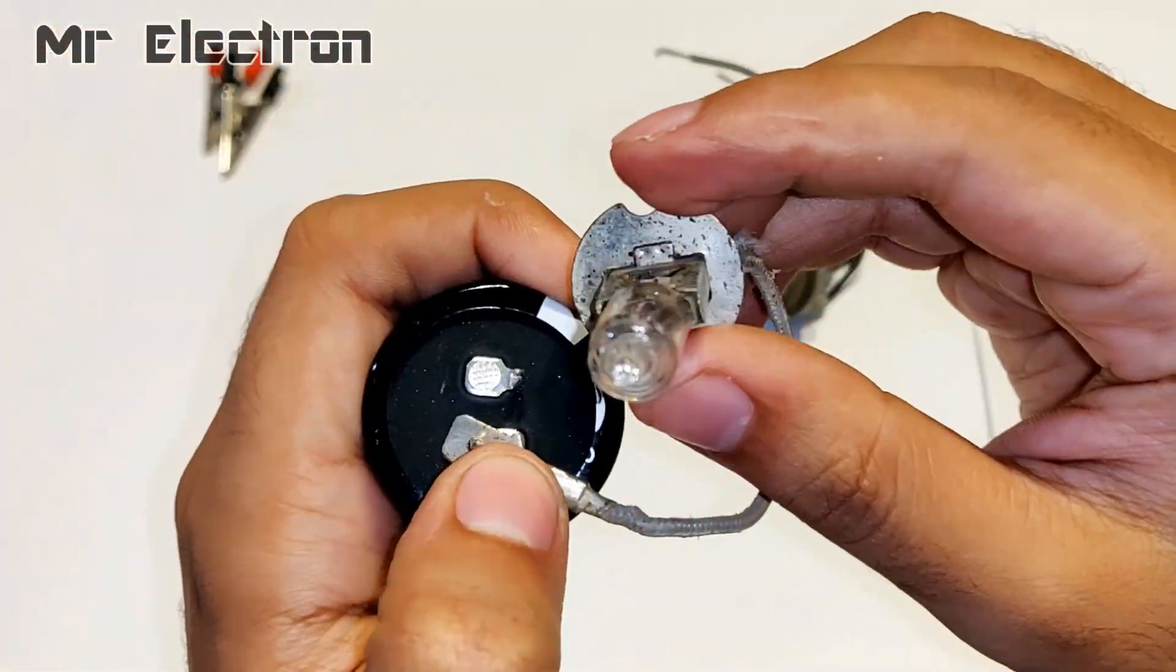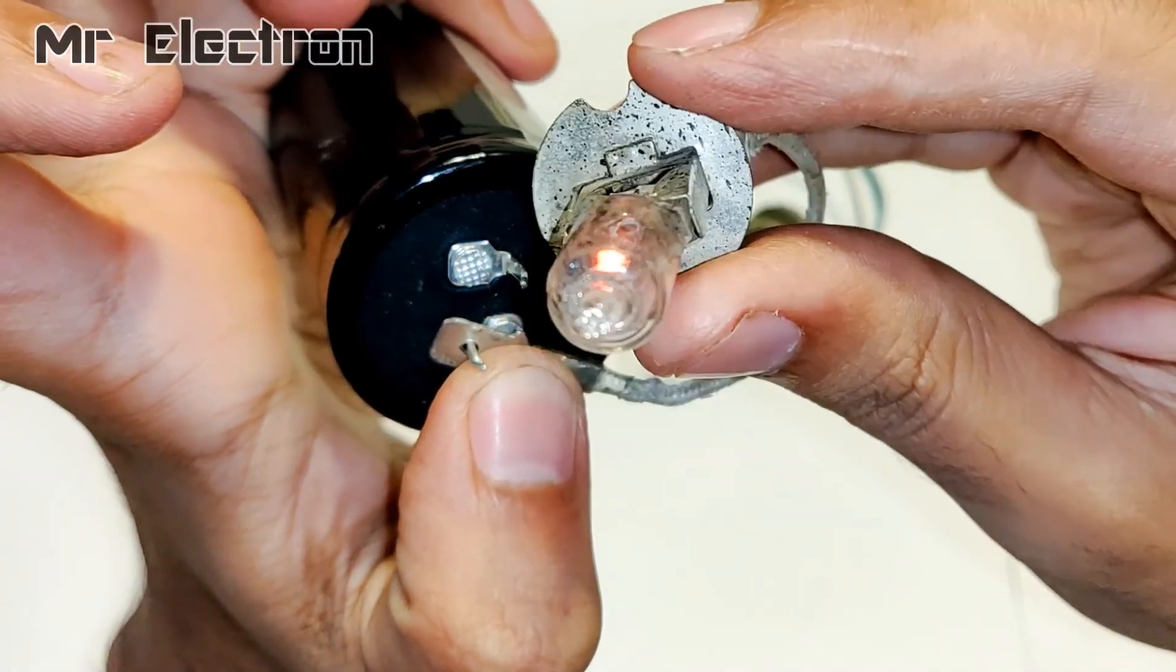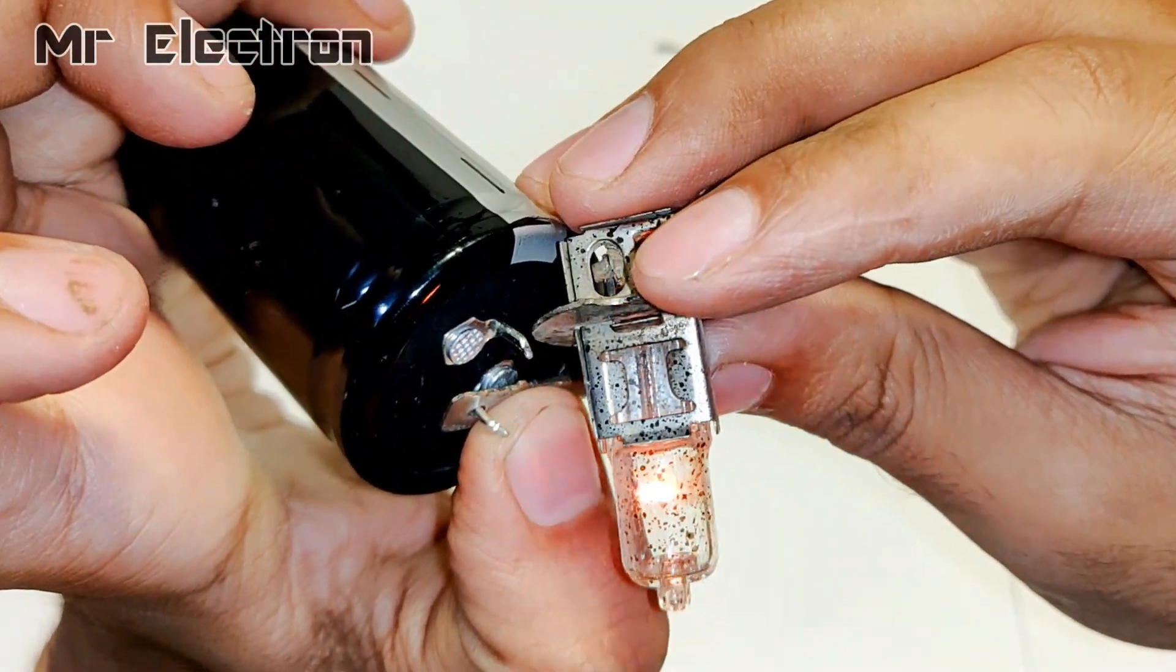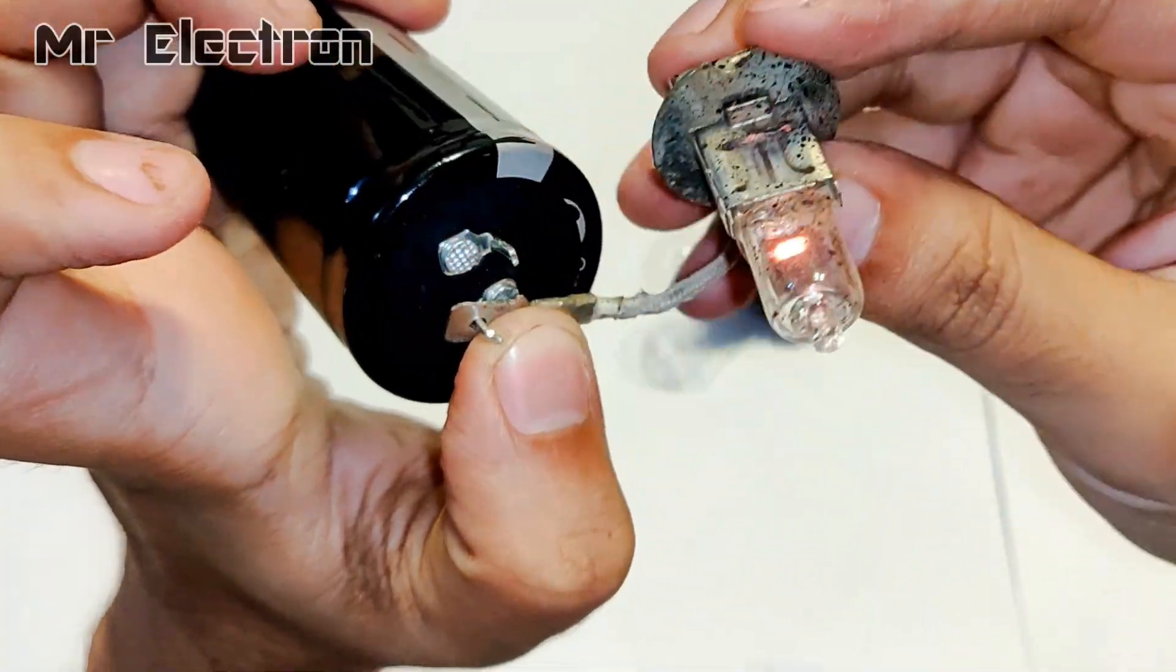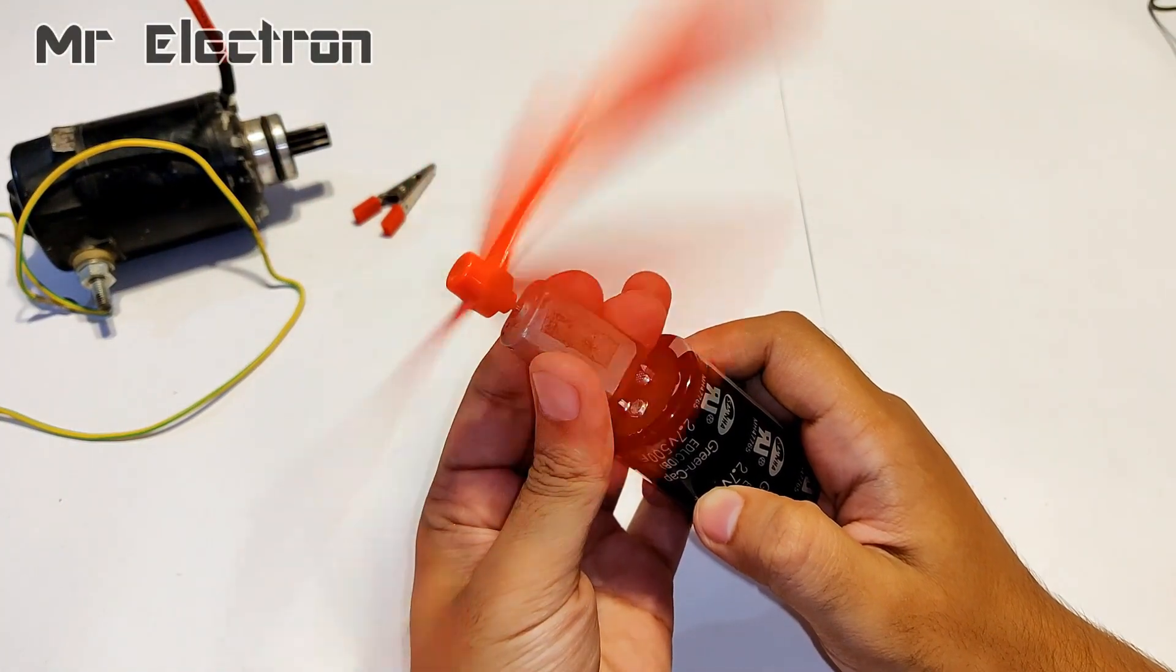And this one is a 12V 55W car headlamp bulb. This requires around 5A to glow. This is a mini DC motor and it is working fine.